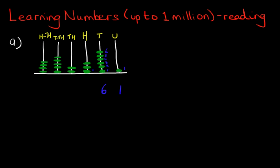Hundreds? One, two, three — there are three hundreds. How many thousands are there? One, two. Ten thousands: one, two, three, four, five. And lastly, the hundred thousands — we've got one, two, three and four.